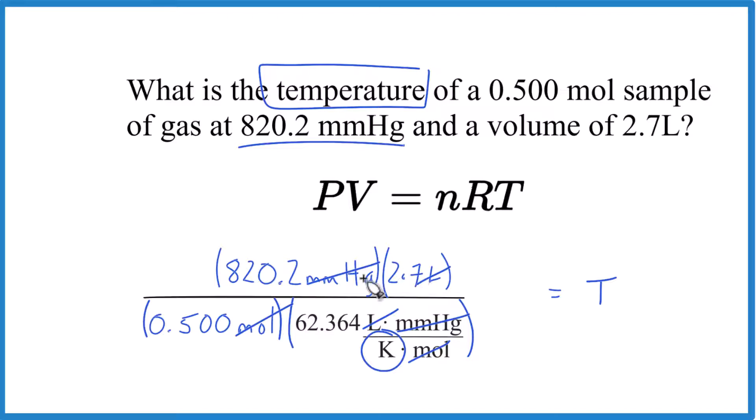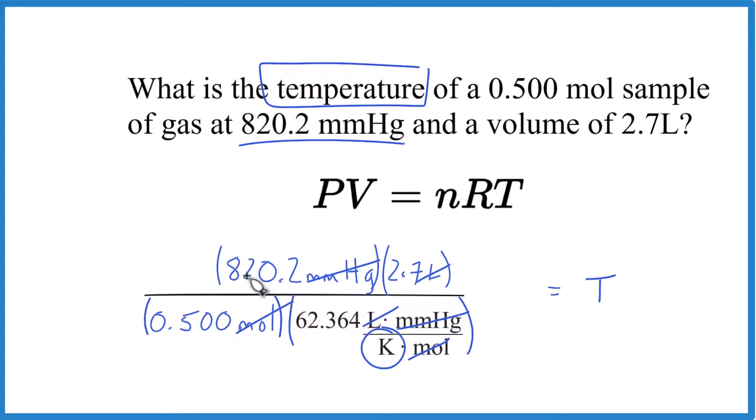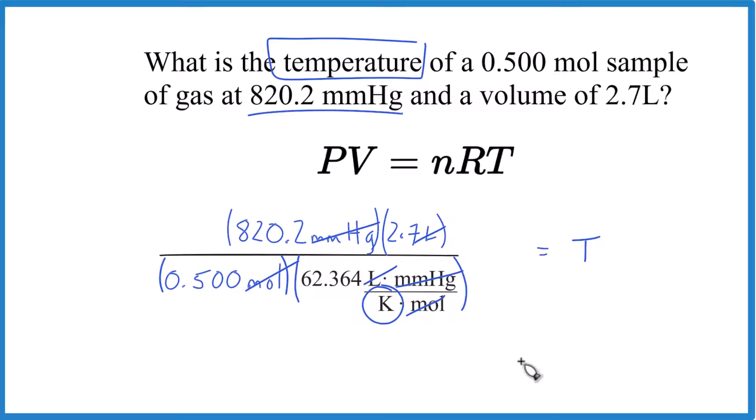So we multiply these numbers here and then here, divide the numerator by the denominator, and our temperature we get 71.2 Kelvin. And really we probably should just have two significant digits here. Right now we have three, but we'll leave it like that for this problem.